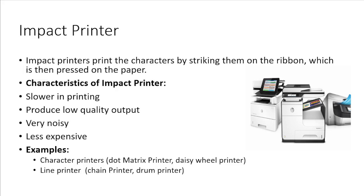An impact printer produces output on paper by striking a print hammer or set of pins against an inked ribbon. It works like a typewriter and uses an electromechanical technique to print output on the paper. Impact printers are slower in printing and produce low quality output. They also produce more noise during printing and are less expensive. Examples of impact printers are character printers such as dot matrix and daisy wheel, and line printers such as chain printer or drum printer.